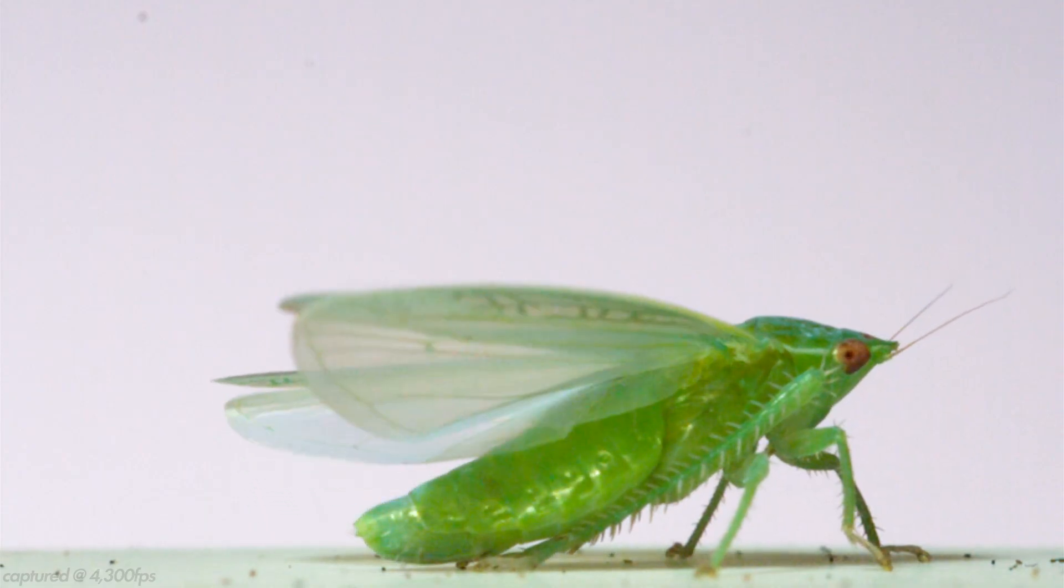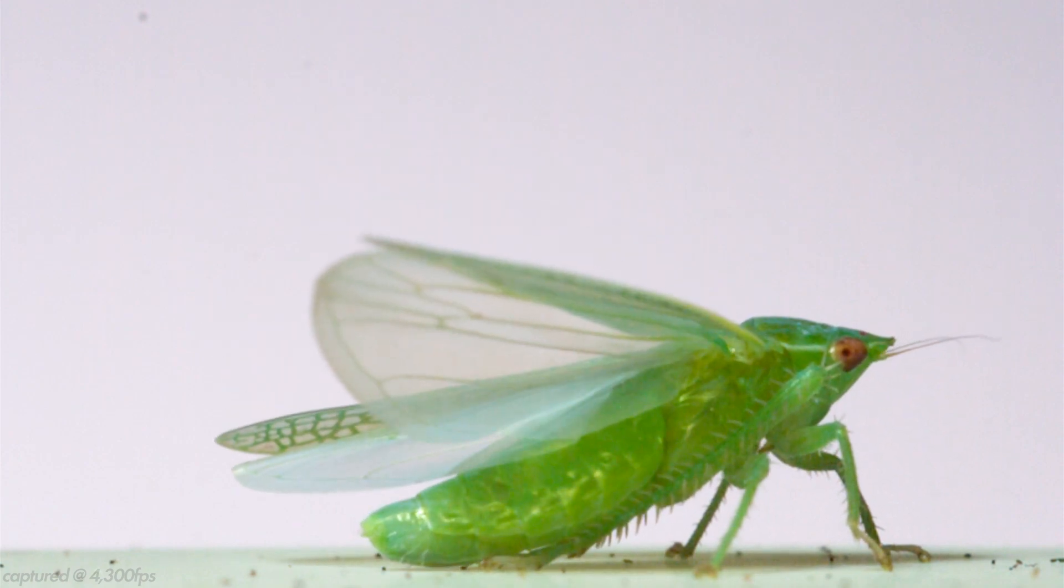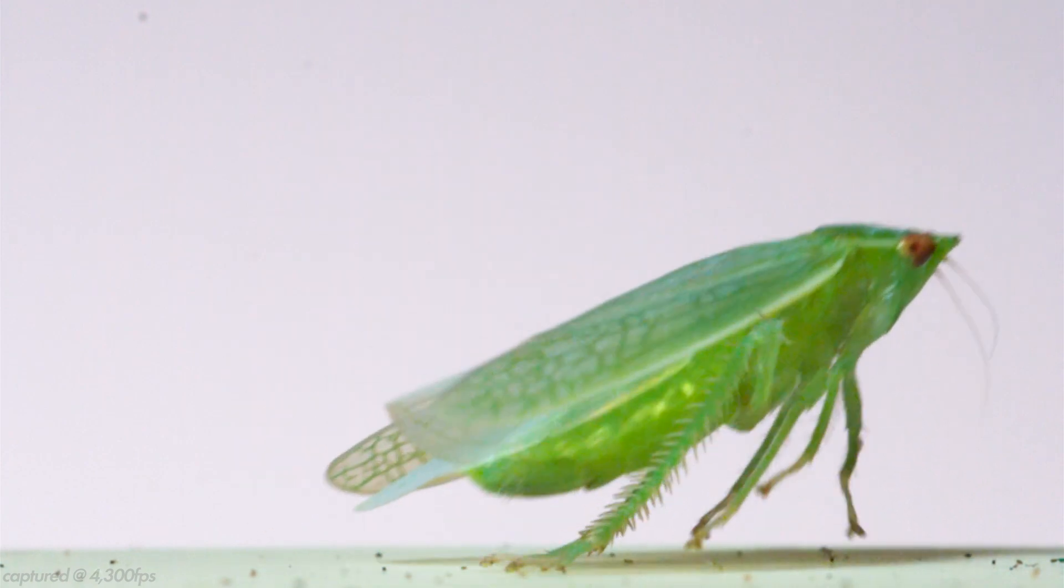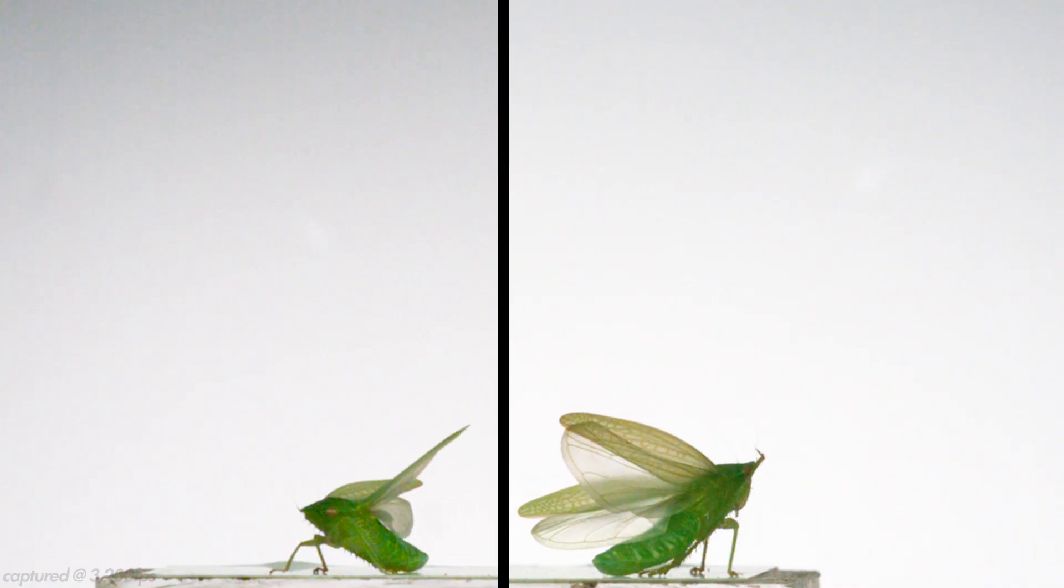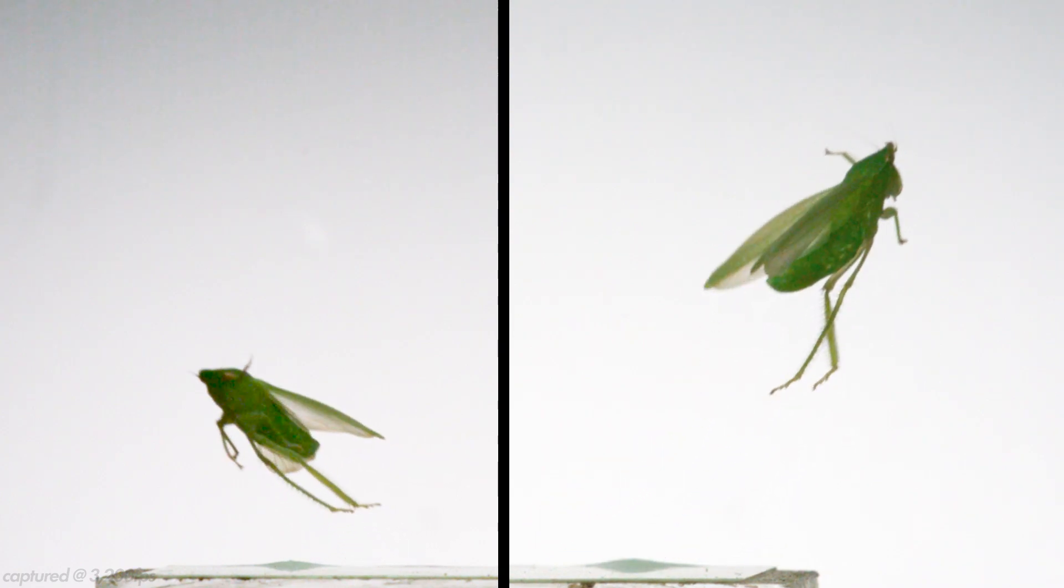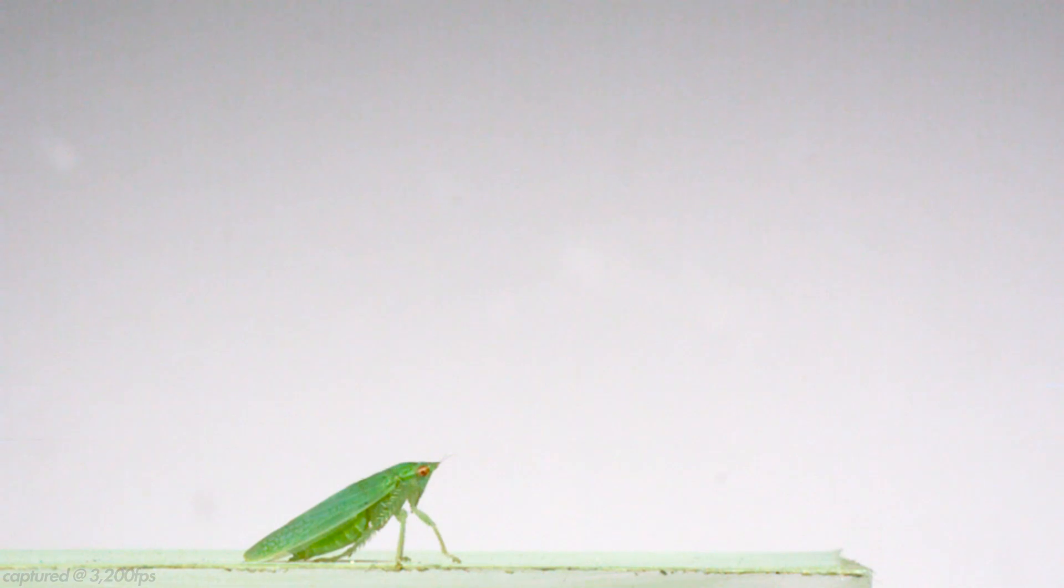Though adult leafhoppers have wings, they usually get airborne by jumping. Like all hoppers, they only use their hind legs to jump, but they don't use big heavy muscles in their legs to do it, which you can tell by how long and skinny their legs are.